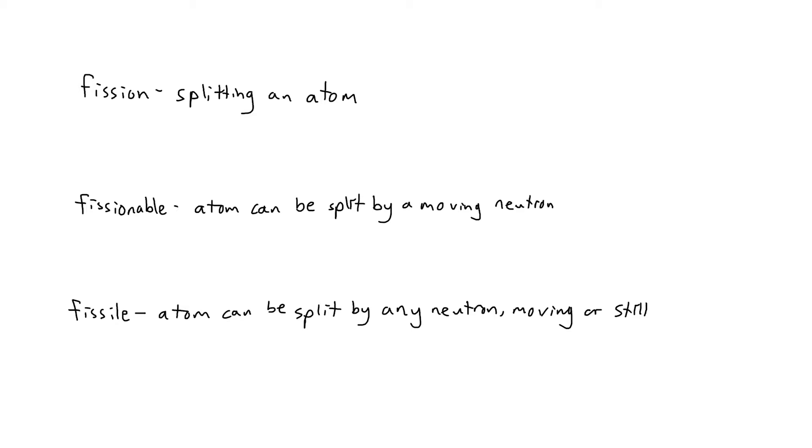This is like how a square is a rectangle, but a rectangle is not always a square. A fissile isotope is fissionable, but the fissionable isotope is not always fissile. Nuclear reactors and nuclear bombs would not exist without fissile isotopes, and this is precisely because of how much easier it is to split a fissile isotope versus a fissionable one.